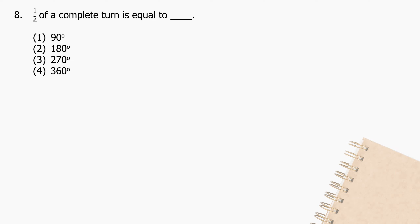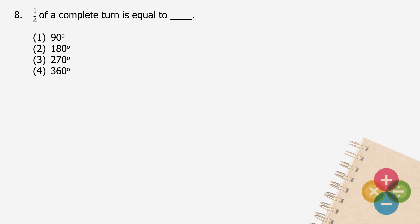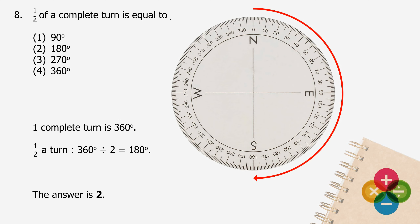Question 8: Half of a complete turn is equal to? One complete turn is 360 degrees. Half a turn will be 360 degrees divided by 2, and the quotient is 180 degrees. The answer is 2.